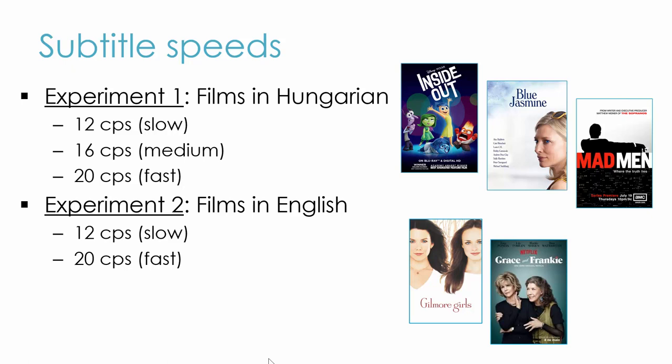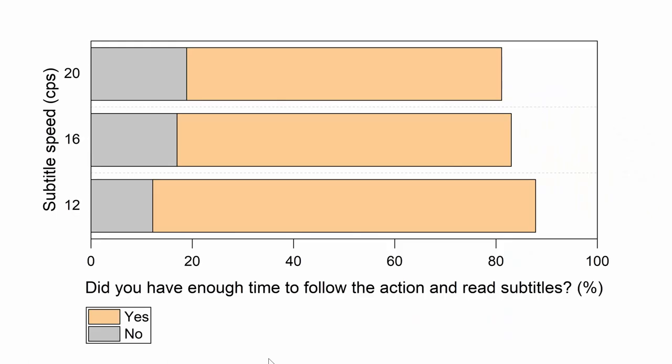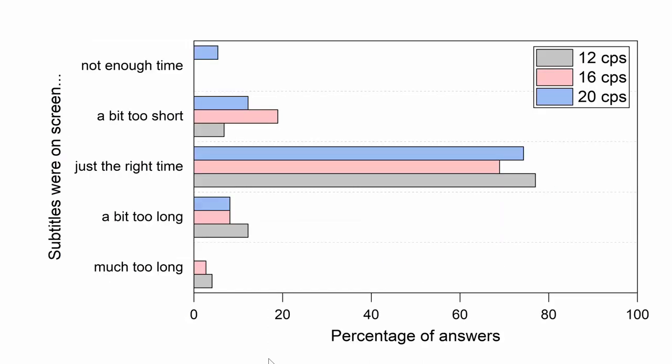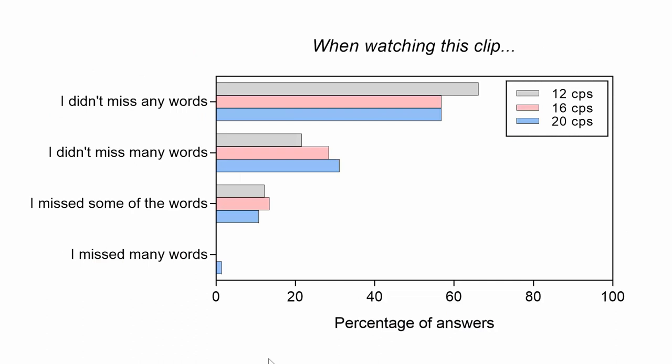We showed people subtitles at different speeds: slow subtitles at 12 characters per second, medium-paced at 16 characters per second, and fast at 20 characters per second. And we tested their comprehension, cognitive load, enjoyment, reading experience and other things. We also monitored their eye movements. After they watched the clips, we first asked people if they had enough time to read the subtitles and follow the action on screen. And in all subtitle speeds, to our surprise — including the fast ones — the vast majority of people said yes, they did have enough time. When asked to assess the time that subtitles were displayed on screen, most people said they were on screen for just the right time in all the subtitle speed options. Most people declared not to miss many or any words in all the subtitle versions, including the fastest one.